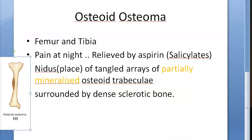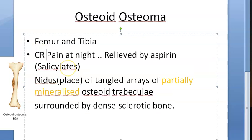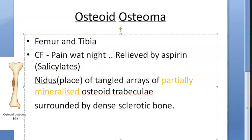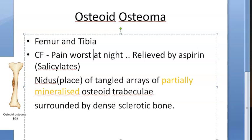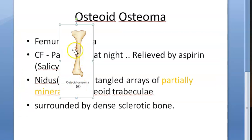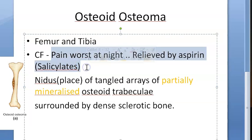The clinical presentation: the patient will have pain, especially in the femur or tibia. The pain is worst at night and is relieved by salicylates like aspirin. There could also be a palpable swelling if the lesion is superficial. Otherwise, clinical signs are minimal — it presents mostly as a symptom rather than showing obvious signs.